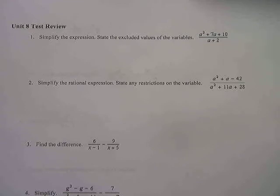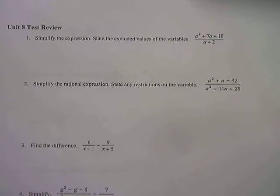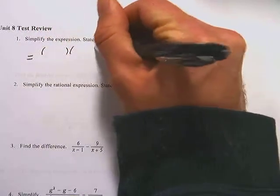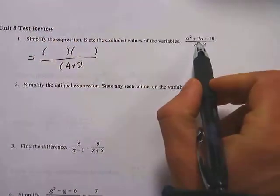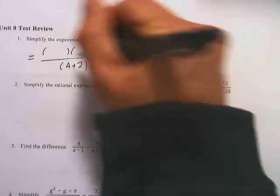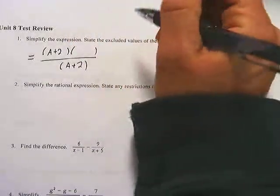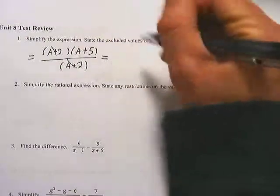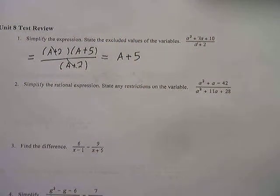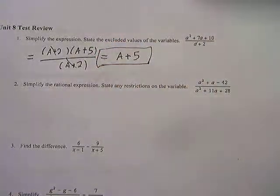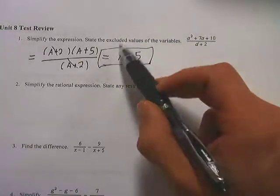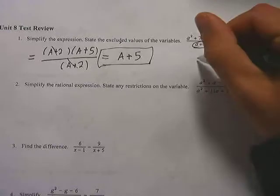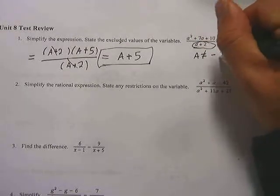On number 1, it says simplify the expression and state the excluded values of the variables. It says a squared plus 7a plus 10 over a plus 2. You can factor this as a plus 2 times a plus 5 on top, over a plus 2. These a plus 2s cancel out, leaving a plus 5, which is the simplest form. The excluded value is a cannot equal negative 2, because you take whatever's in the denominator of the original and set it equal to 0.